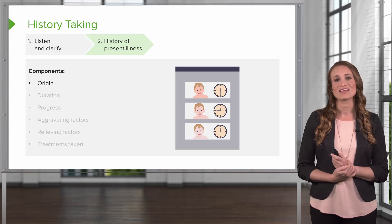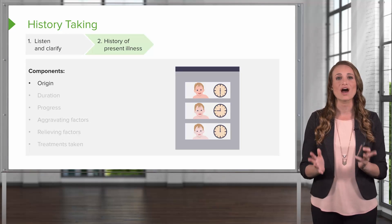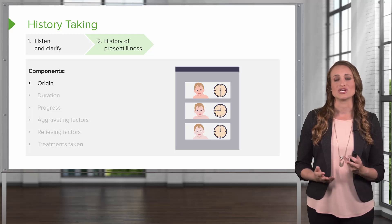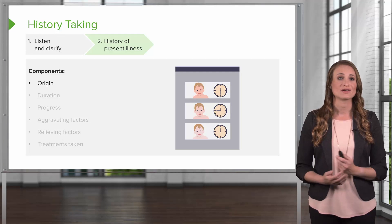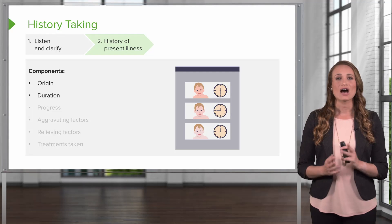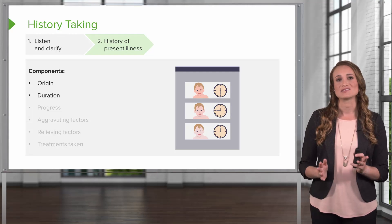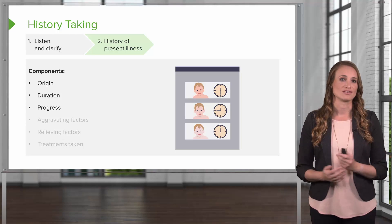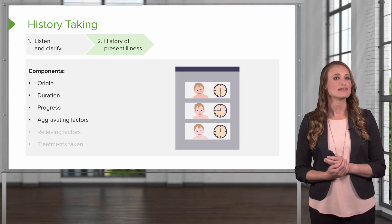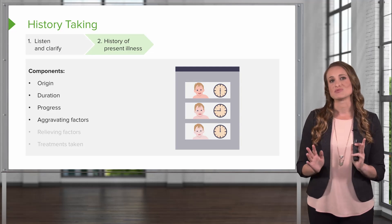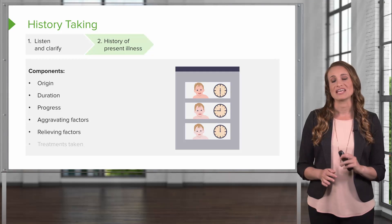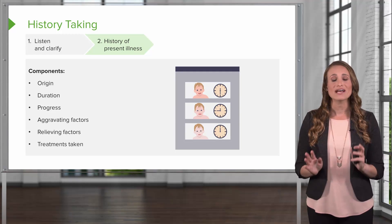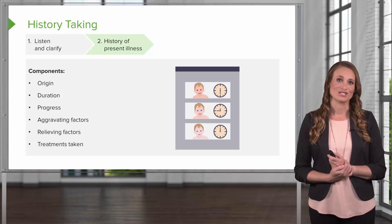Next, you ask about the history of present illness — this is why the patient is there. You're going to ask about the origin: when did their concern start, how long has this been going on, and what's the progression of their concern? Is there anything that makes their symptoms worse, and is there anything that makes their symptoms better? And what have they tried to remedy this condition?